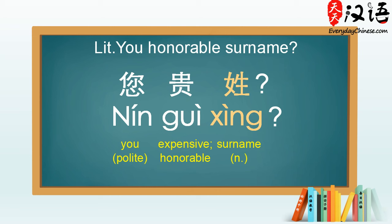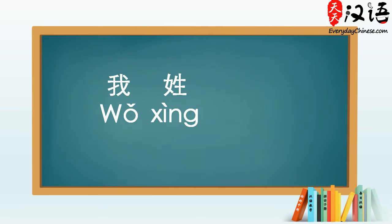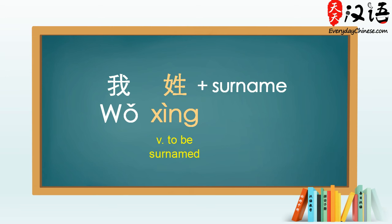Listen again: 您贵姓. If a Chinese person asks you 您贵姓, to answer it, you can use 我姓 plus your surname. In this sentence, 姓 functions as a verb which means 'to be surnamed'.